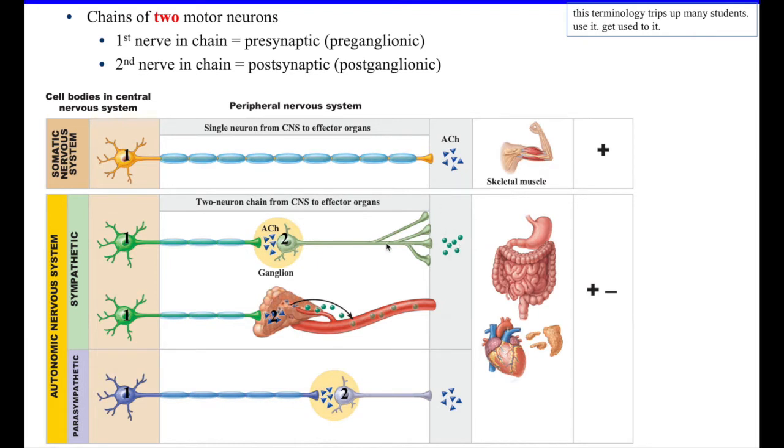Now I'm taking it easy on you right now using the words first and second. Later we're going to be using the terms. This is the last time I'll ever use those words for this. I'll be saying preganglionic. That's what we call the first one. Preganglionic neuron, preganglionic axon. Here's the ganglion, this neuron here is called postganglionic neuron, postganglionic axon.